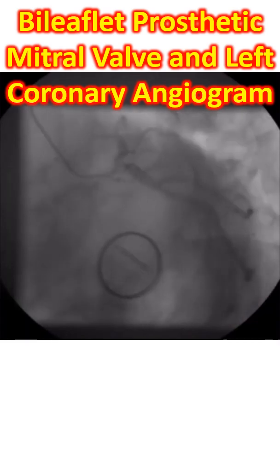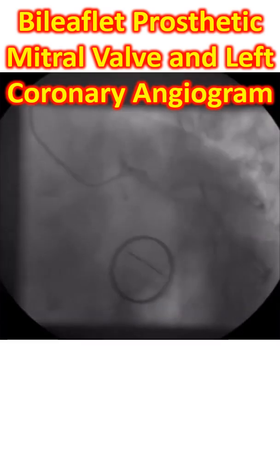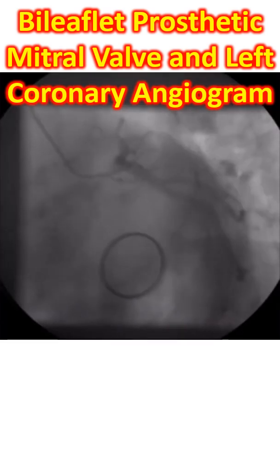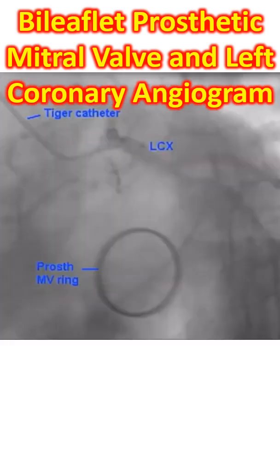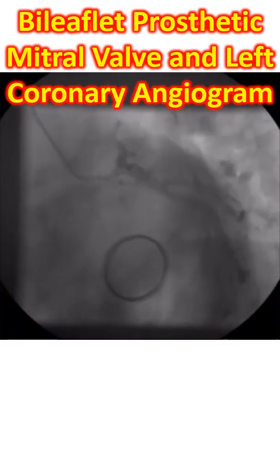The image shows the opening and closing of the mitral leaflets. This is the ring of the prosthetic mitral valve. The leaflets are seen opening and closing, and two leaflets are seen in this view.